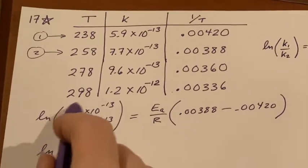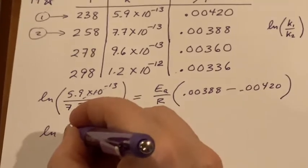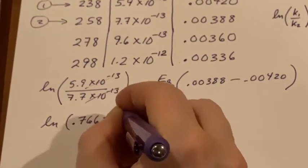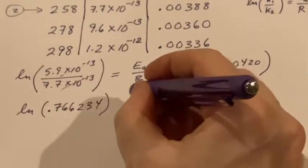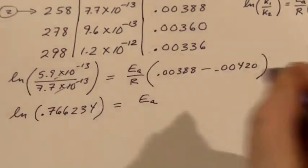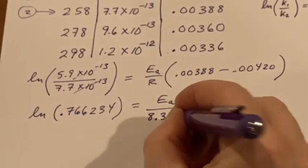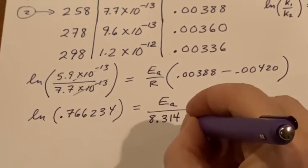We are going to want to use the one that has joules in it this time because this is an energy. If I calculate the 5.9 over the 7.7, because those canceled, taking the natural log of 0.766234 - I'm adding all sorts of extra sig figs right now because they'll disappear eventually.